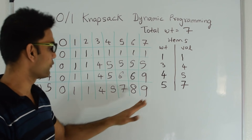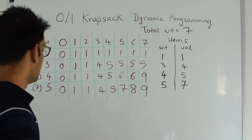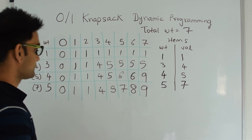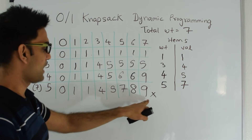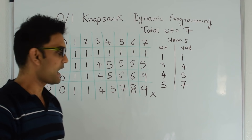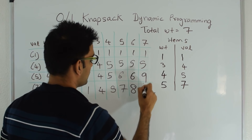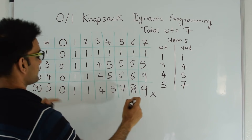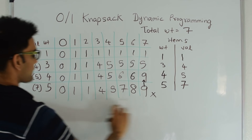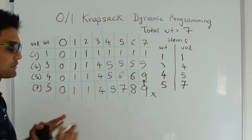This is the maximum value we can get by picking items such that total weight is less than or equal to 7. Now if someone asks what are the actual items selected, let's see how to find them. We start from our answer cell and retrace back through the matrix. This value of 9 — we check where it's coming from. It's coming from the top, meaning item with weight 5 is not selected. If this item had been selected, the value would not be coming from the top.